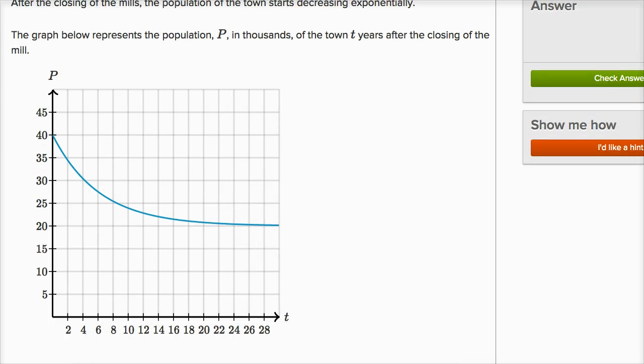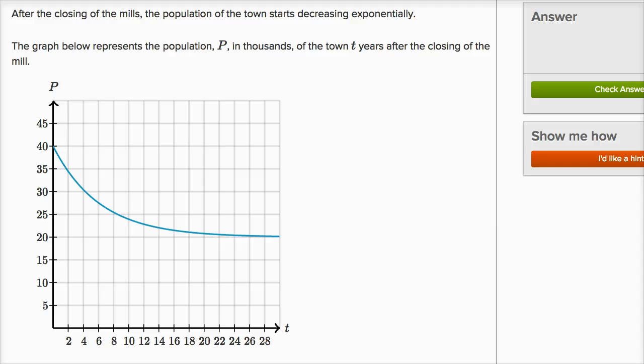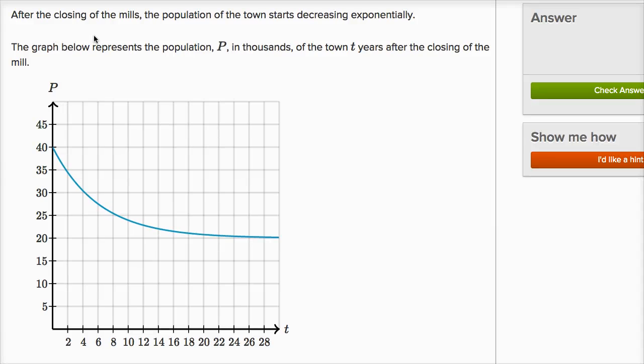After the closing of the mills, the population of the town starts decreasing exponentially. The graph below represents the population P in thousands of the town T years after the closing of the mill.